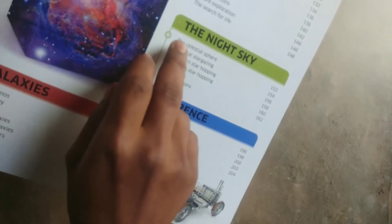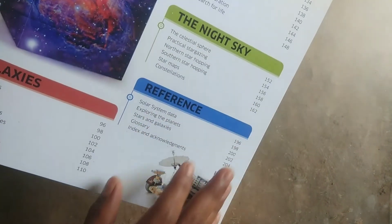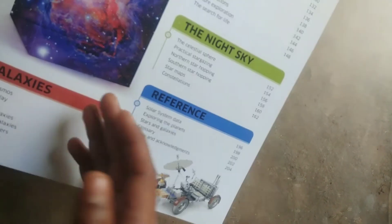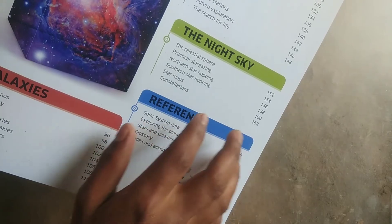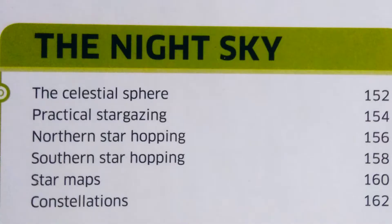The next section is The Night Sky. In this section, you will learn about celestial space and practical stargazing. Practical stargazing is my favorite in this book. It also covers the North Star, hopping, etc. I will provide the remaining topics on the screen.